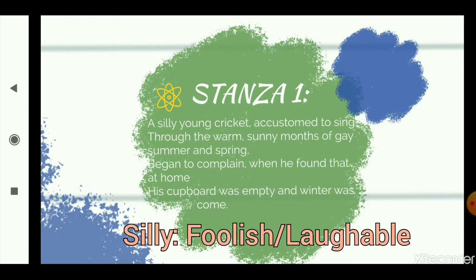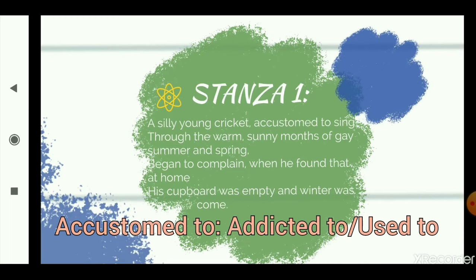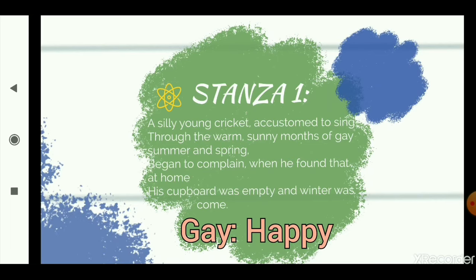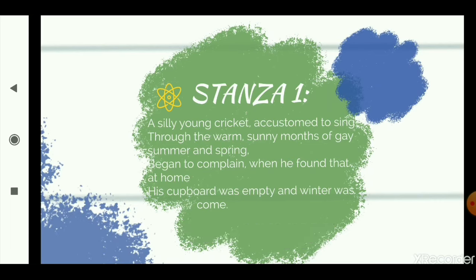A silly young cricket — so he is a foolish young cricket — and he is accustomed, which means he is very used to, to sing. He sings through the warm sunny months of gay. Gay means happiness. Gay months of summer and spring. So what does he do? He just sits idle, sings, laces around, goes here and there, being happy and chirping around.